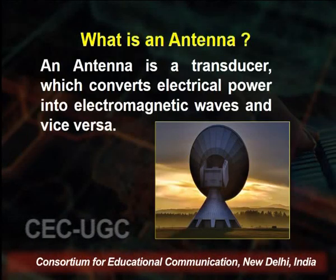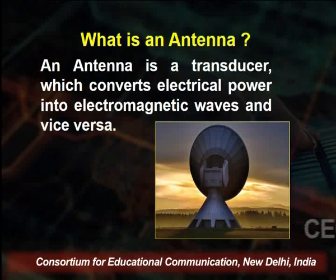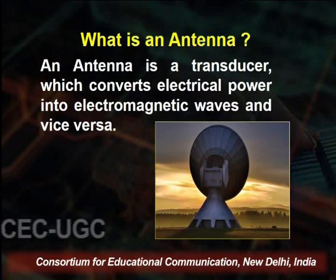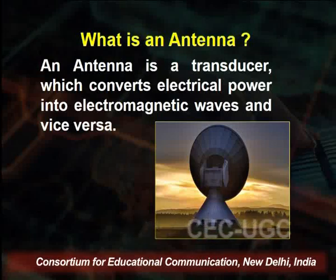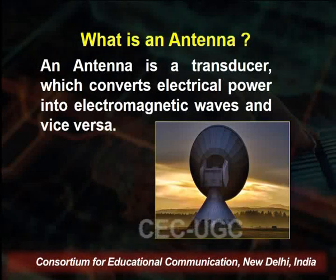First we discuss the definition — what is an antenna. An antenna is a transducer device which converts the electric power into electromagnetic waves and vice versa. It converts electrical power into electromagnetic waves, which transfer from one end to another, and similarly it converts electromagnetic waves back into electrical power.